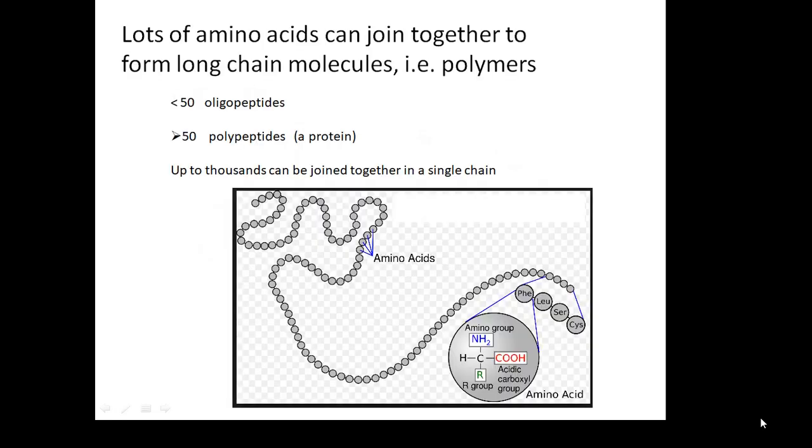If lots and lots of amino acids join together, then we get a polymer. If it's less than 50, it's called an oligopeptide. If it's more than 50, then it's a polypeptide. And that is what a protein is, a polypeptide. Lots and lots of amino acids, and up to thousands of them can be joined together in a single chain.